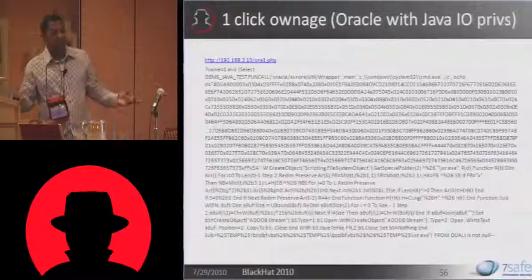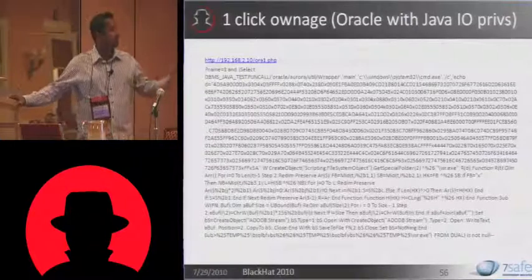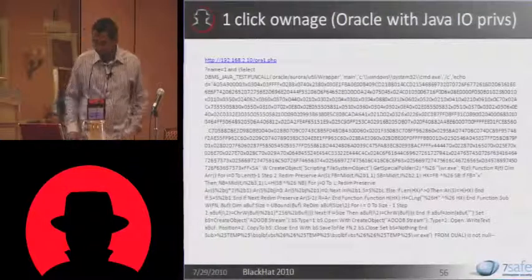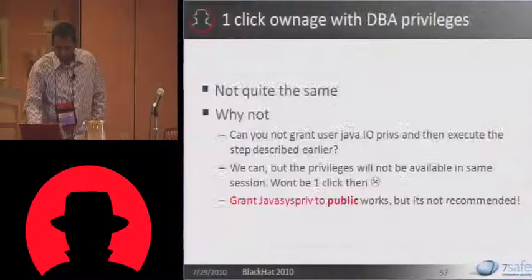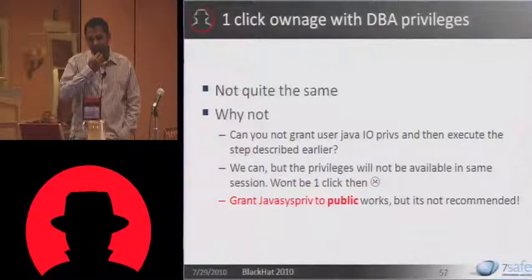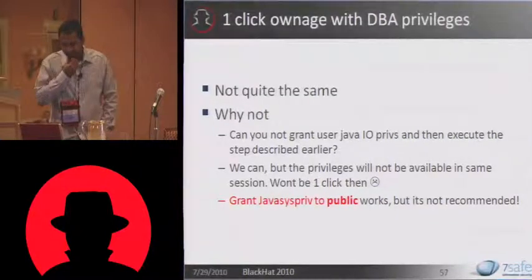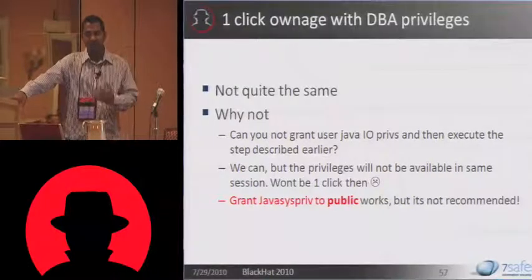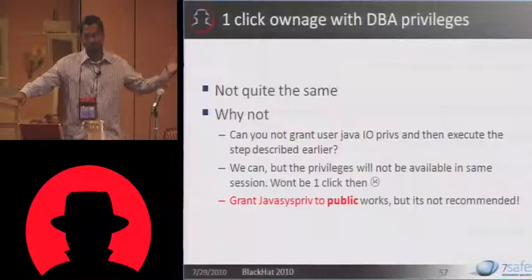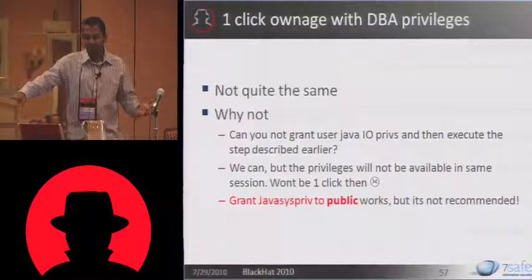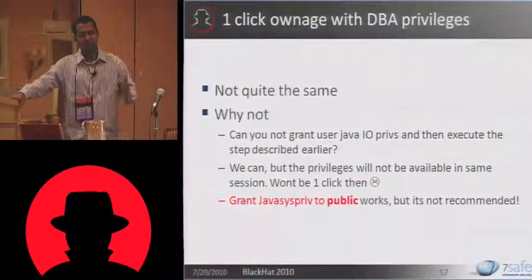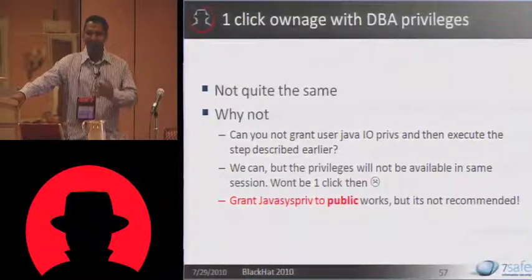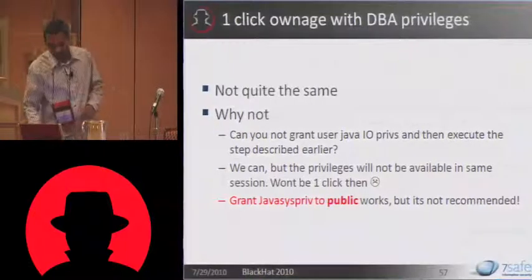You can do similar stuff in Oracle — as we've seen, if you have Java IO permissions you can call the function. Interestingly, when we tried to do it with DBA privileges, it wasn't that straightforward. A DBA user can technically grant himself Java IO permissions and then run the exploit we showed previously. But the problem was that the permissions were not available in the same session — you had to log out and log back in. If you do that, then it's not technically one-click; it's probably more than one click and doesn't serve the purpose.